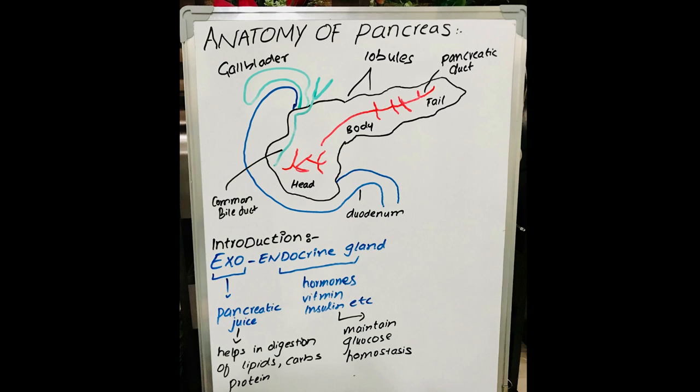Pancreas is both an exocrine and endocrine gland. In its exocrine function, it releases pancreatic juices which help in the digestion of lipids, carbohydrates, and proteins. In its endocrine function, it releases hormones, especially insulin, which function to maintain glucose homeostasis.